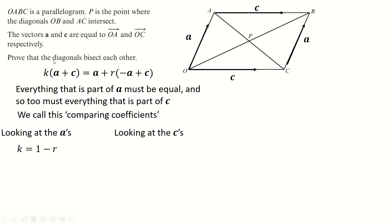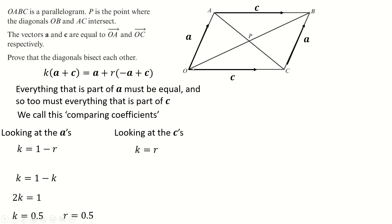And for the C's: K·C on the left equals R·C on the right, so K equals R. That's a good start — I want them both to equal a half. Substituting R into K, then adding K to both sides and dividing by 2, we get K equals a half, which means R equals a half. K was saying how much of O to B we needed to get O to P, so this is now half of the whole thing — it's split in half. And likewise for R. So we've proven the diagonals bisect each other.